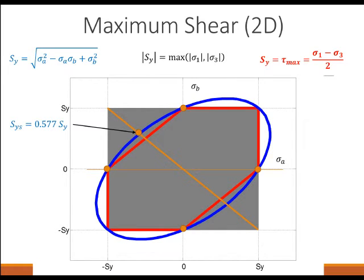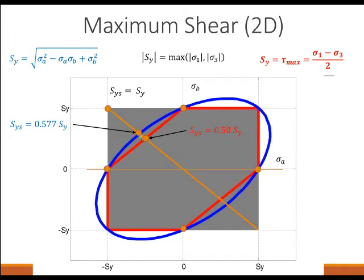For von Mises, we derived that the shear yield stress is 1 over the square root of 3 times the normal yield stress, or 0.577. For the maximum normal theory, the yield stress for shear is equal to the yield stress for normal load. And for the maximum shear condition, the yield stress in shear is equal to one half the yield stress. You can see that the maximum shear theory is conservative compared to the von Mises.